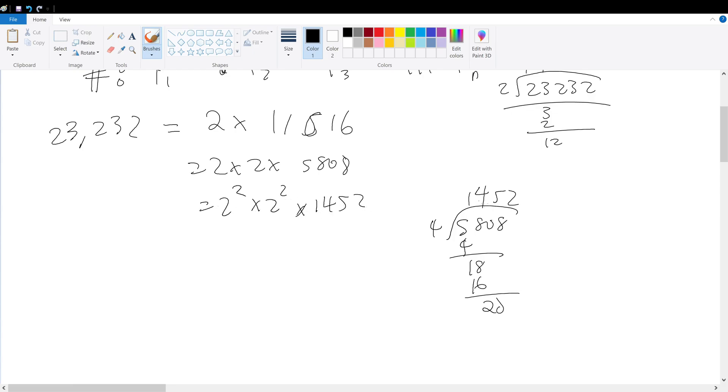Now, 52, right, is divisible by 4. So let's divide by 4 again. That's divided by 4. It's 363. So that's equal to 2 to the 4th times 2 squared times 363. Now, that's divisible by 3. So 2 to the 6 times 3 times 121. 121 is the square of 11. Now, 2 to the 6 times 3 times 11 squared.